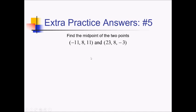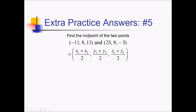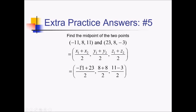For this problem, we're trying to find the midpoint of these two points, so we're essentially averaging the x values, the y values, and the z values together. We've got (x1 plus x2) over 2, and the same thing for the other two coordinates. So we have (negative 11 plus 23) over 2, (8 plus 8) over 2, and (11 plus negative 3) over 2. This is going to be 12 over 2, which is 6; 16 over 2 is 8; and 8 over 2 is 4.